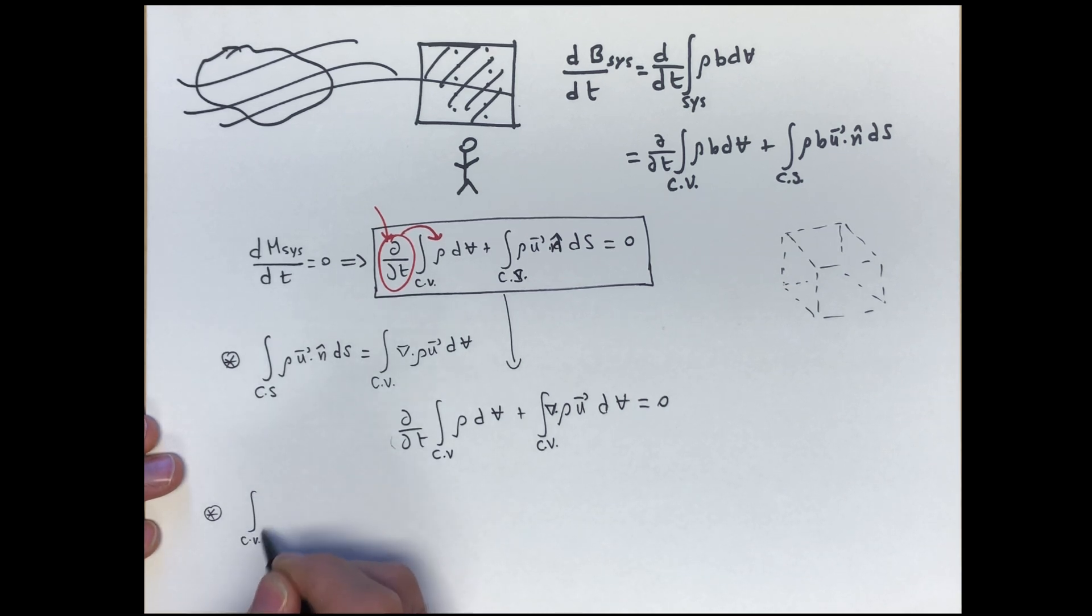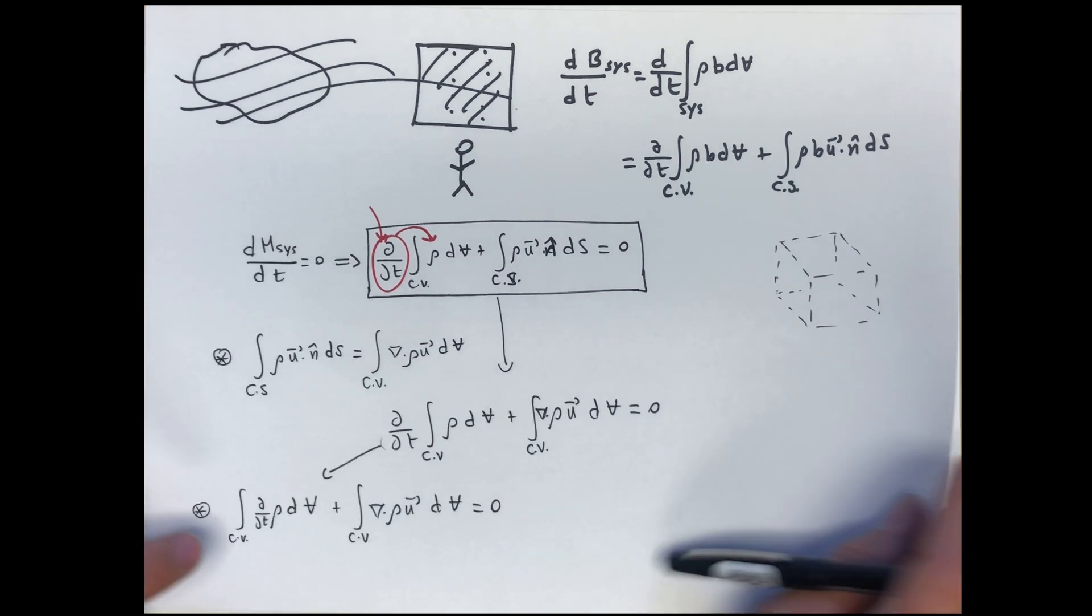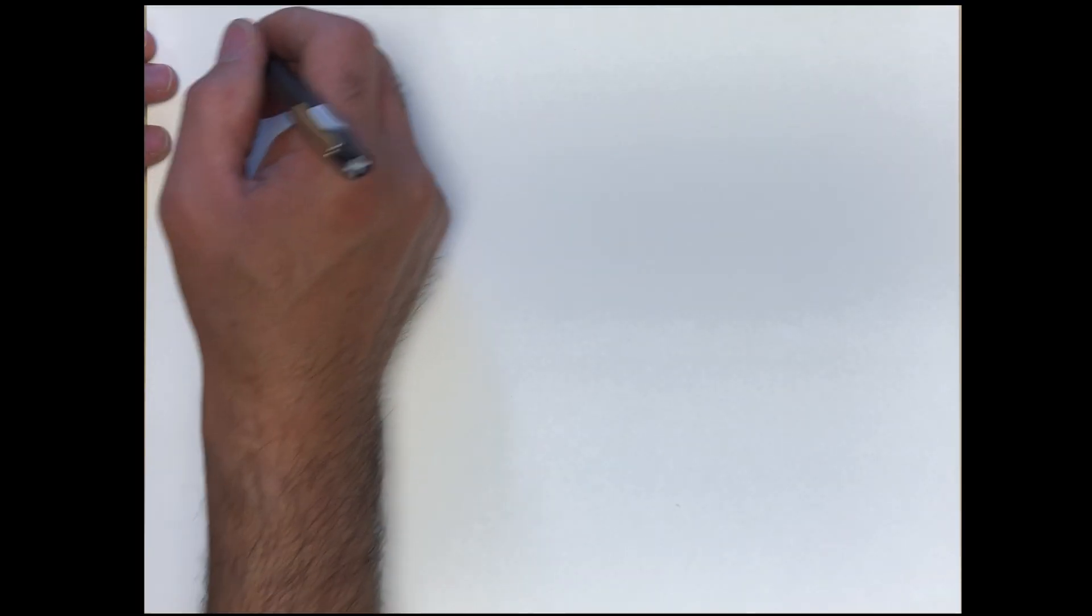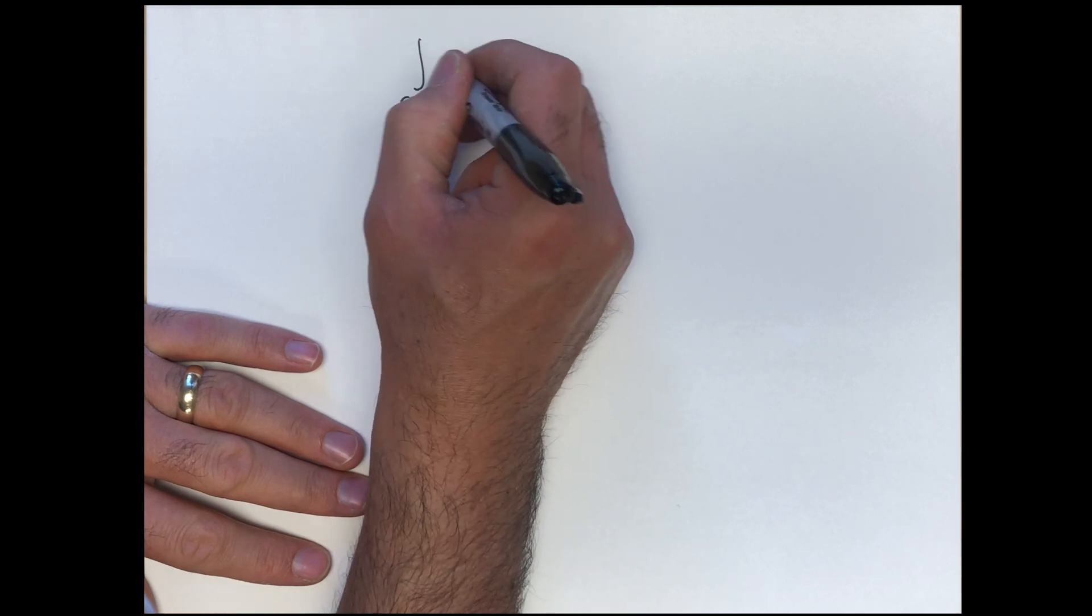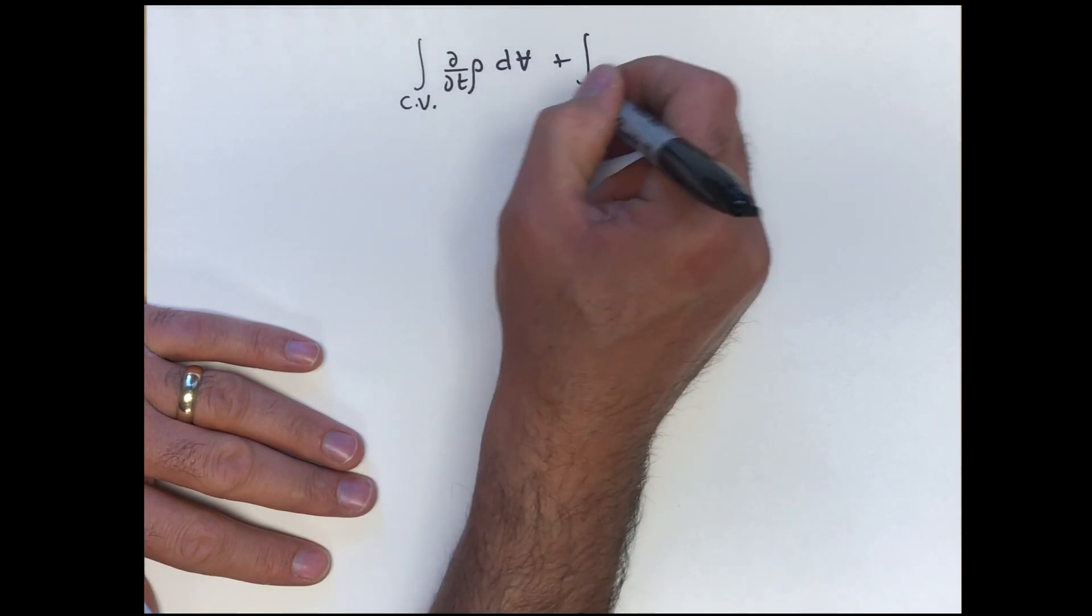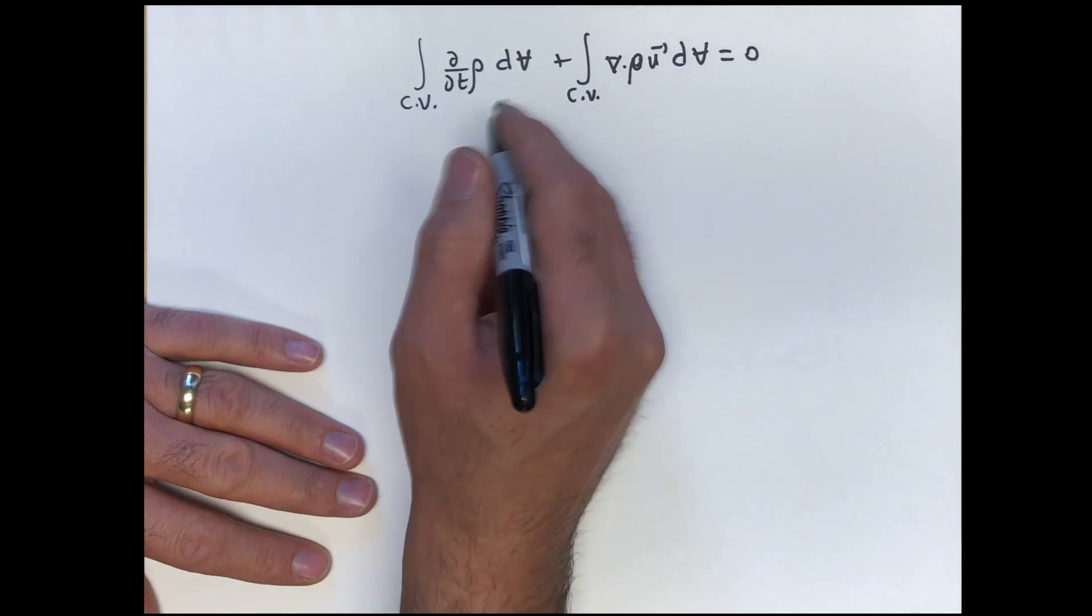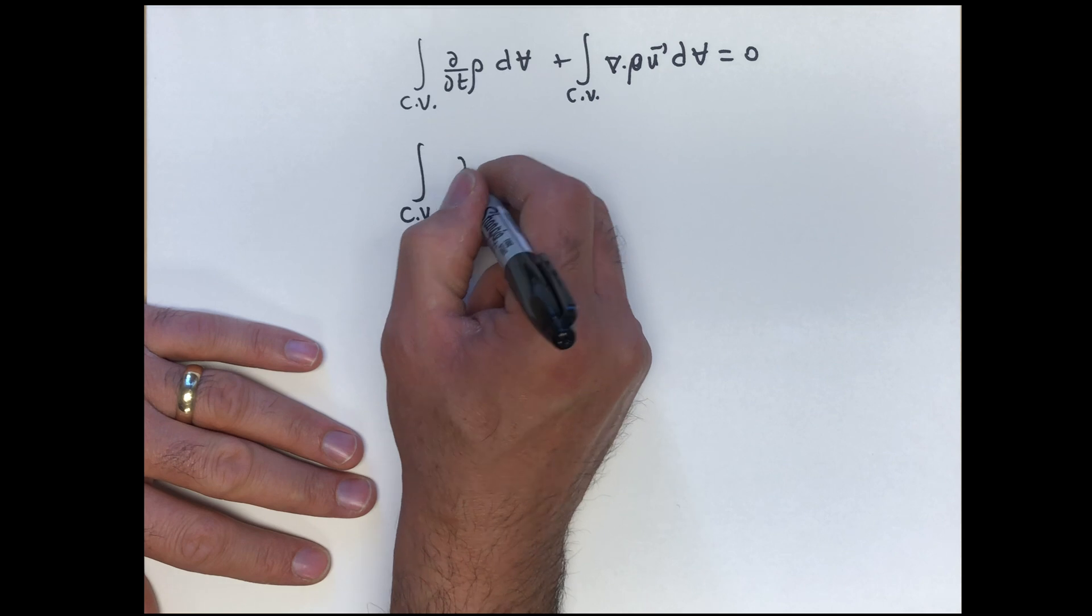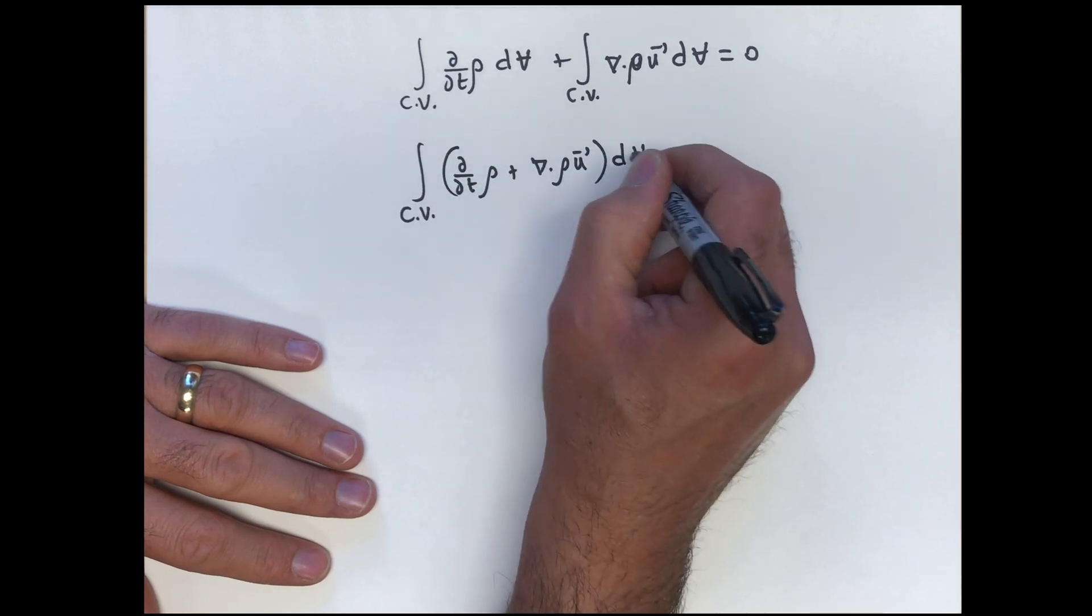So then we have this integral over the control volume of ∂/∂t of ρ dV, going from here to there, plus the integral over the control volume of div ρu dV equal to zero. Now, the next step is to simply take that. So integral over the control volume of ∂/∂t of ρ dV plus integral over the control volume of div ρu dV is equal to zero. Let's combine both of these into a single integral. We'll see ∫_CV of (∂ρ/∂t + div ρu) dV equal to zero.